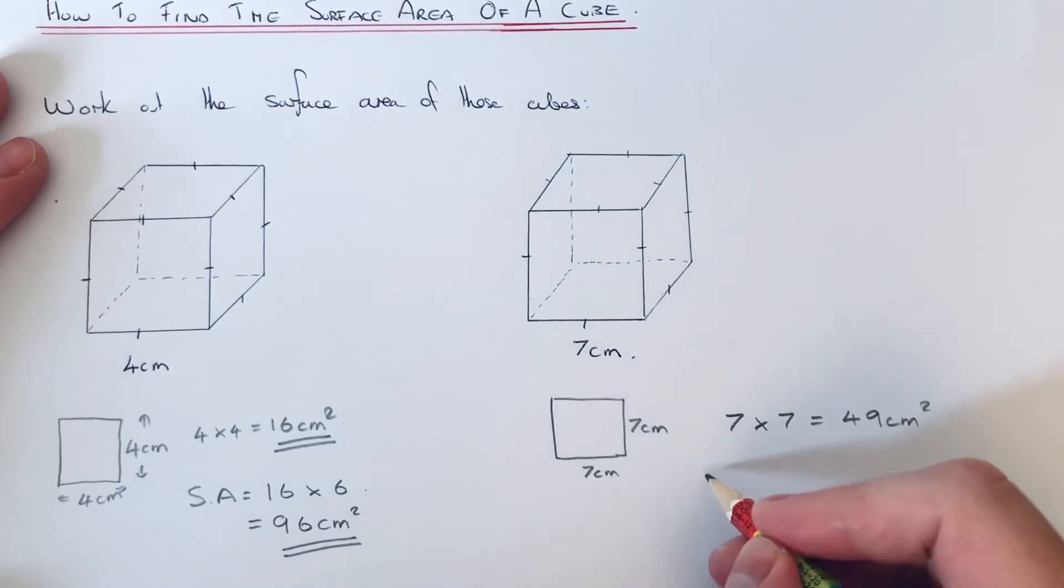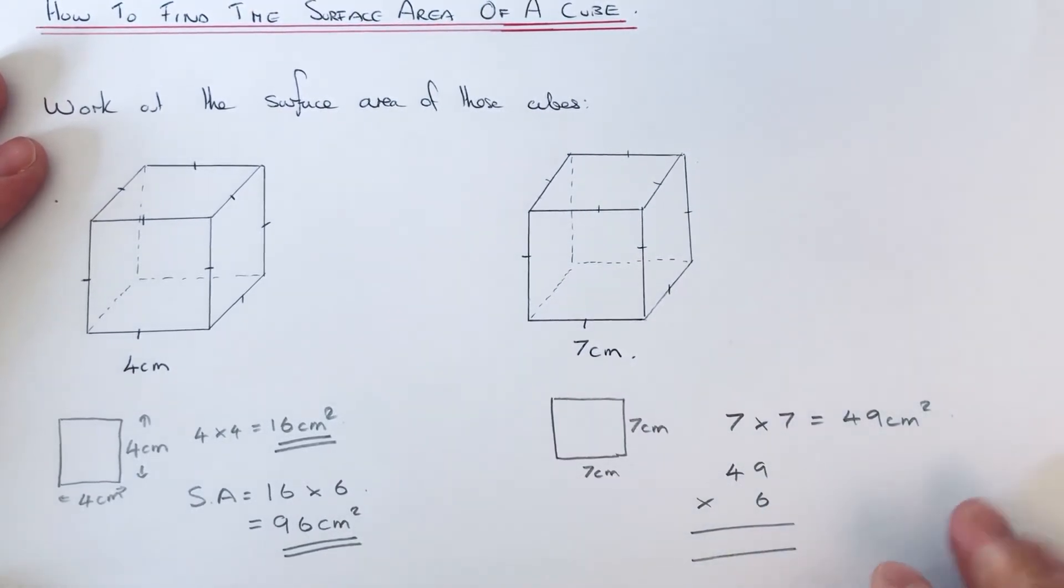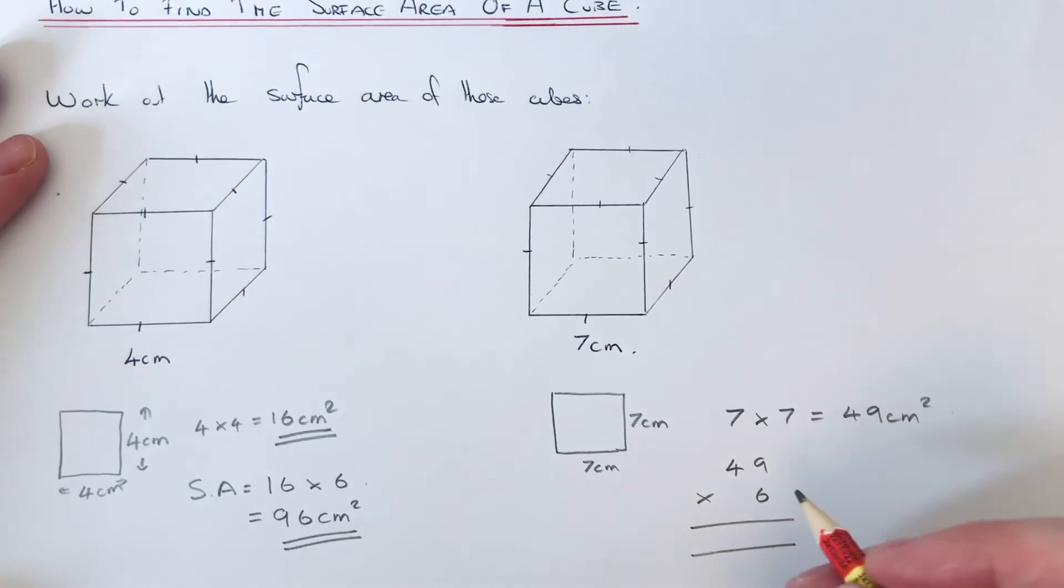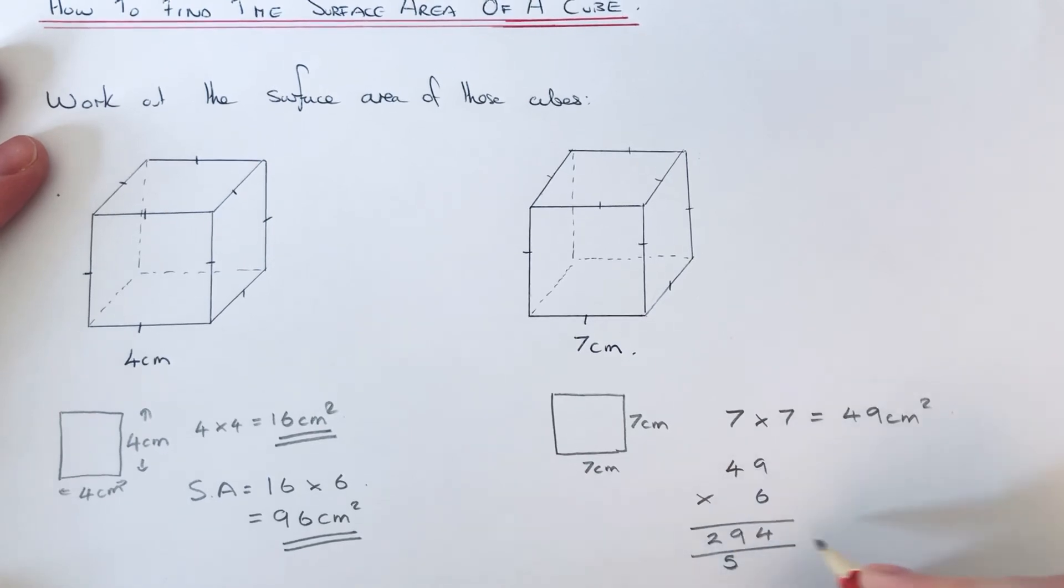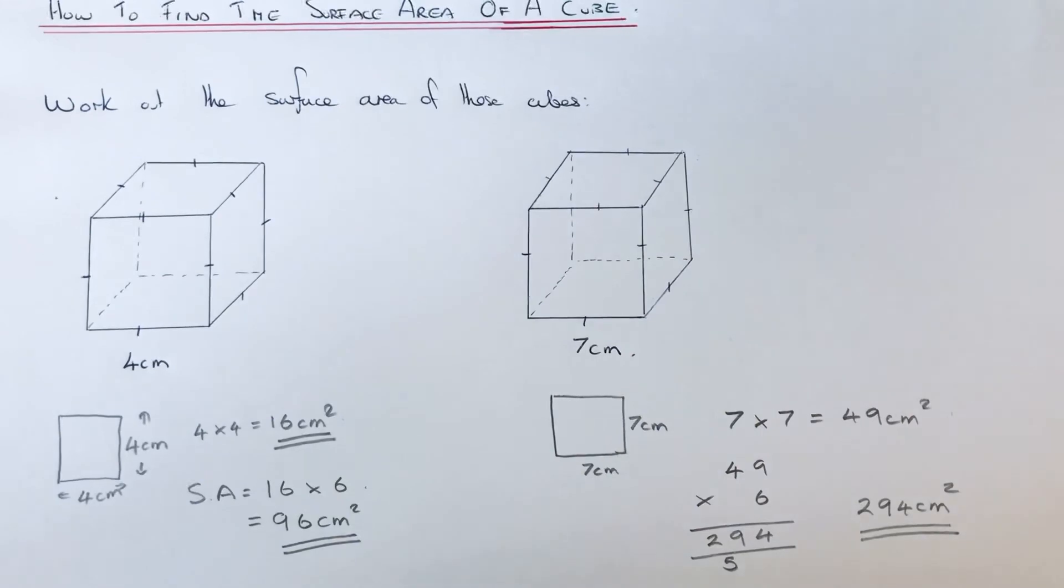...we times 49 by 6. So 9 sixes are 54, 4 sixes is 24, plus the 5 is 29. So our surface area is 294 centimeters squared. I hope you liked this video.